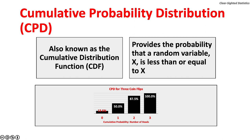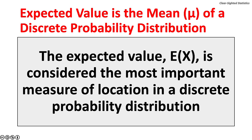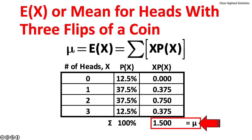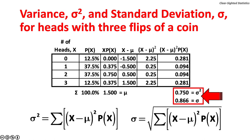The cumulative probability distribution, or CPD, provides the probability that a random variable x is less than or equal to x. This distribution is also known as the cumulative distribution function, or CDF. This chart shows the CPD for the outcomes of flipping a coin three times. The expected value is the mean or mu of a discrete probability function, considered the most important measure of location. It is the weighted mean of all possible values. For heads with three flips of a coin, the mean is 1.5. The variance sigma squared is 0.750 and the standard deviation sigma is 0.866.